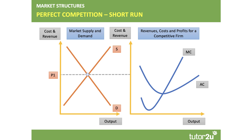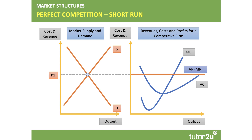So what about the diagram? You're looking at the interaction between the market supply and demand and the individual representative firm. The left-hand side is the market; the right-hand side is one firm in that industry. The market sets the price — the interaction between supply and demand gives price P1 — and that then becomes the demand curve for each firm.